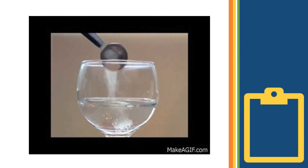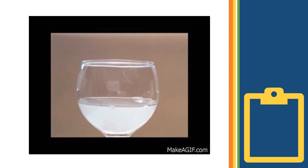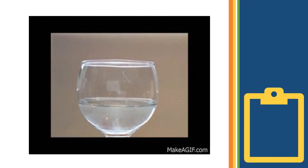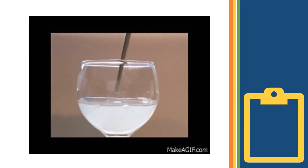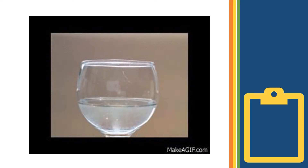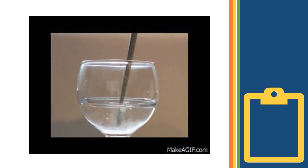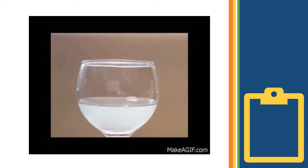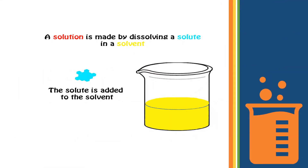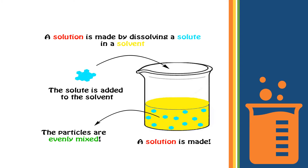You will see that sugar crystals disappear after some time. This is because sugar is soluble in water. A solution is made by dissolving a solute in a solvent.